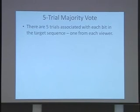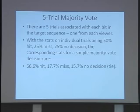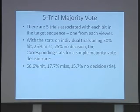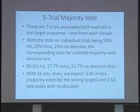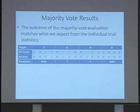What I saw when looking at this is that you could apply a five-trial majority vote technique. Theoretically, with individual trial stats of 50% hit, 25% miss, and 25% no decision, if you do a majority vote of five, the corresponding stats become about two-thirds hits, a little over 17% misses, and a little over 15% no decisions for predictions on a particular bit. That means with 16 bits, we expect a little under three errors and somewhere between two and three tied votes with no decision — and the outcome turns out to be exactly what we would expect from the individual trial statistics.